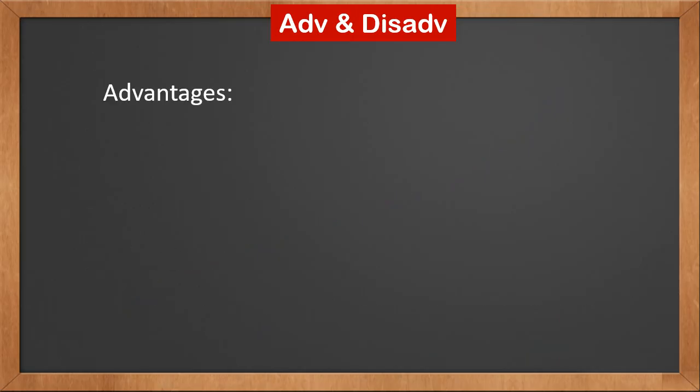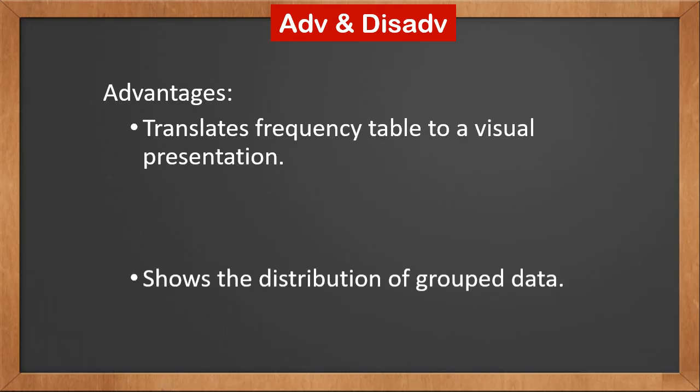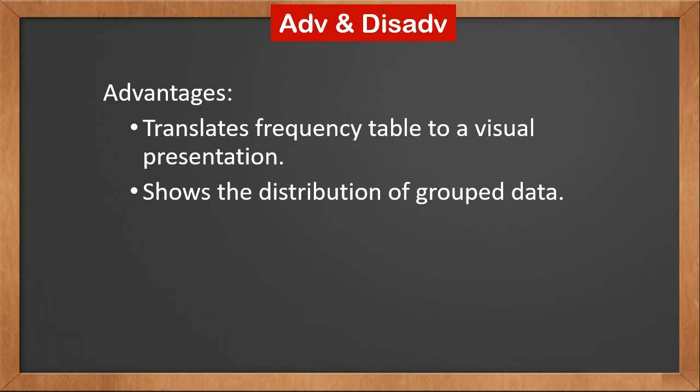Cumulative frequency graph translates frequency table to a visual presentation and shows the distribution of grouped data. In the example, we gave the total number of values, n, as ten only. But grouped data usually has a large n, because this is the purpose of grouping data together. We don't want to see the raw data because there's too much of it. Cumulative frequency graph gives us an easy view of a large amount of data.